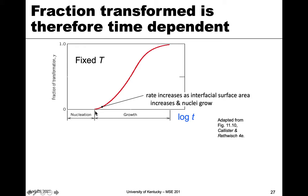Once that is complete, we're dealing with the growth phase. Initially the growth phase is slow, but then it increases to a maximum here in the middle, and then at the end it starts to tail off and become slower. The rate increases as the interfacial surface area increases and as the nuclei grow. This is the generic curve that we tend to see when we measure how much is transformed as a function of time.